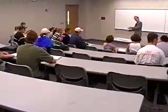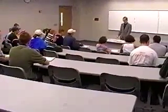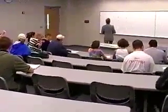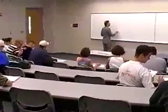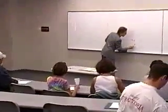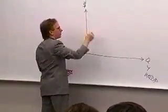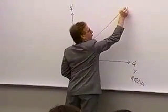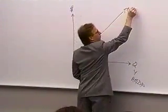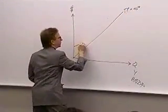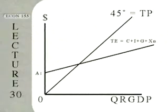Today we want to finish up the material on fiscal policy, and then we'll be ready for an exam covering the Keynesian economic model and fiscal policy. The Keynesian model has a total production curve, which is the 45-degree line, and a total expenditure curve where total expenditures equals consumption plus investment plus government spending plus net exports.